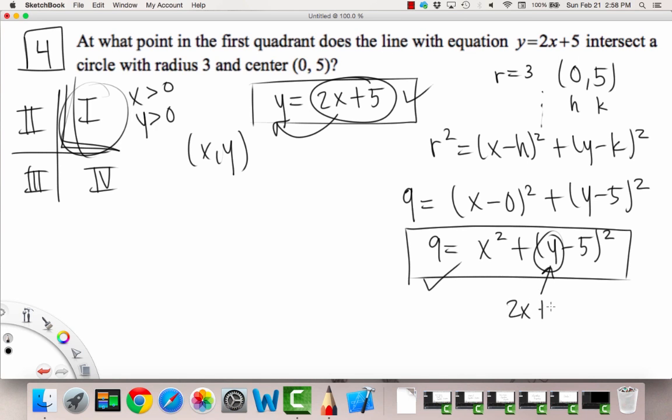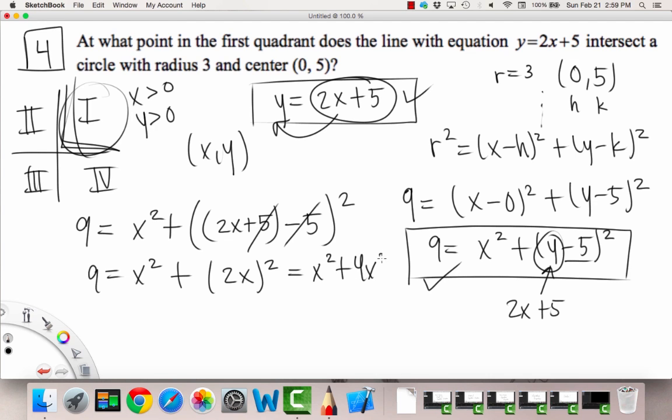So we're just gonna plug in a 2x plus 5 in that y spot. So let's do it over here. 9 is equal to x squared plus, and I'm gonna write parentheses around what we're gonna plug in, this 2x plus 5 minus 5, that was already there, right, and then squared. So we see that the positive 5 and the negative 5 cancel out nicely. And we get 9 is equal to x squared plus this 2x quantity squared, which is equal to x squared plus 4x squared, which is equal to 5x squared. So we get 9 is equal to 5x squared.